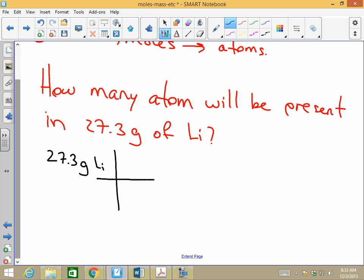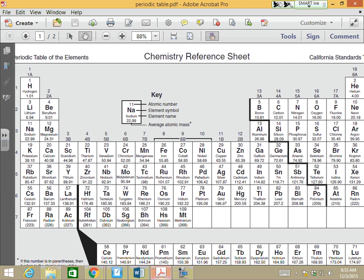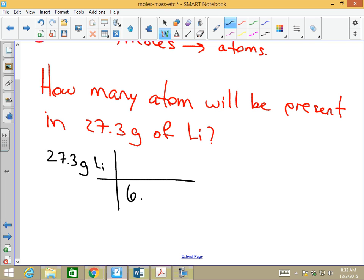27.3 grams of lithium. I need to cancel that with the mass of lithium. If I go to the chart, lithium has a mass of 6.94. Let's use all of that. 6.94 at the bottom, 6.94 grams of lithium. Go to one mole. One mole of lithium.